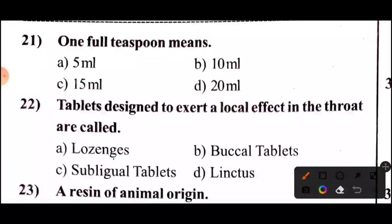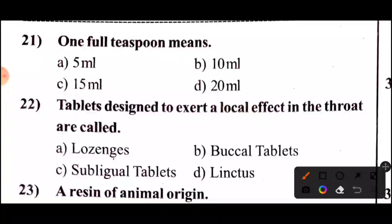Question 21: What does 1 full teaspoon mean? Take 5 seconds to think. The answer is: 1 full teaspoon means 5 ml.